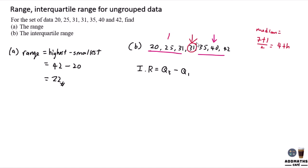So it will be the middle of this side. So your answer over here is 40 minus 25, which gives you 15. So this is your interquartile range.